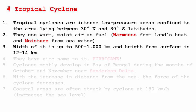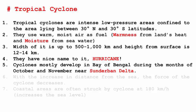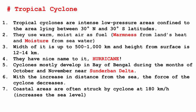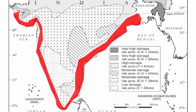The width of these cyclones is usually between 500 to 1000 km, and their height from the surface is 12 to 14 km. Cyclones are usually called hurricanes. In India, cyclones mostly develop in the Bay of Bengal during the months of October and November, near the Sundarbans Delta. As the distance from the sea increases, the force of the cyclone decreases because the moist air fuel runs out — warm air is available over land, but moist air is only found near sea level. Coastal areas are often struck by cyclones at speeds of 180 km per hour, which can naturally raise the sea level and push water toward coastal areas, causing tsunamis or floods.